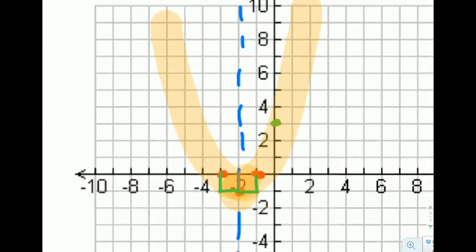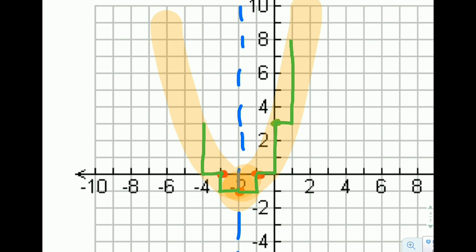Another option, if you're looking for a shortcut, is whenever a is equal to 1, and only when a is equal to 1, you get this nice pattern of going over 1, up 1, over 1, up 3, over 1, up 5, over 1, up 7. And you can keep doing that. But again, that only works when a is equal to 1. Otherwise, there are other patterns you can find.